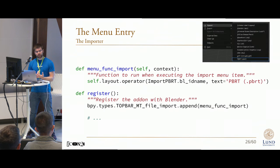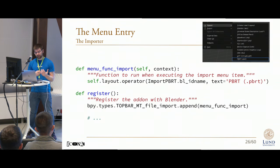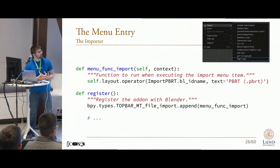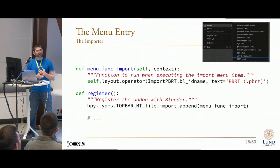As for the menu entry, that is actually one of the easiest things to add. When registering the extension, we simply append an operator to the Blender object, which is then called when we actually select that menu entry. So even if the text is a little bit small, I hope you can see the highlighted entry that adds a new file extension that you can actually work with.